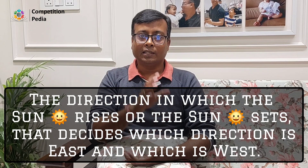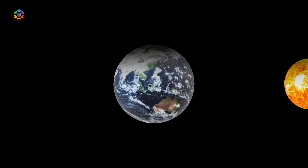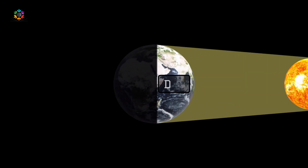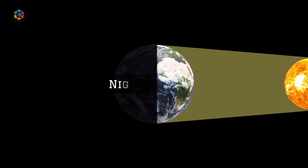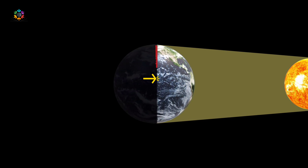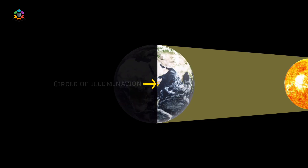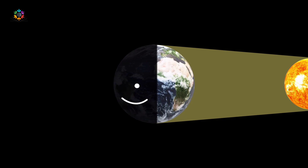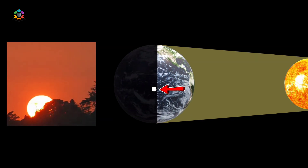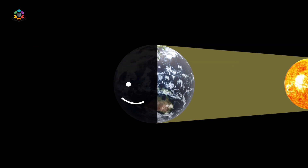It is the direction in which the Sun rises or sets that decides which direction is East and which is West. Look at this illustration: since the earth is spherical, the Sun's rays cover only the half portion of it, signifying day, while the rest remains in dark, signifying night. This day-and-night portion is separated by a circle called the circle of illumination. When any point on the spinning earth reaches the circle of illumination, it experiences sunlight coming from a specific direction — that is sunrise — and since the Sun is rising from that direction, it is East.